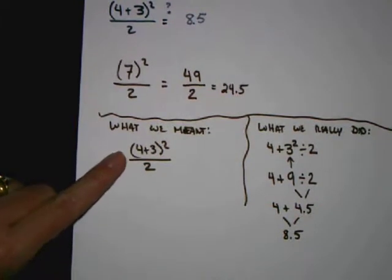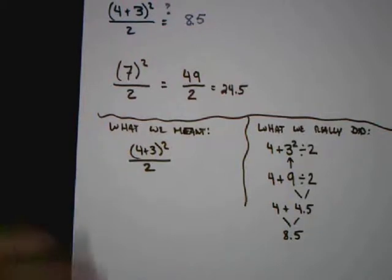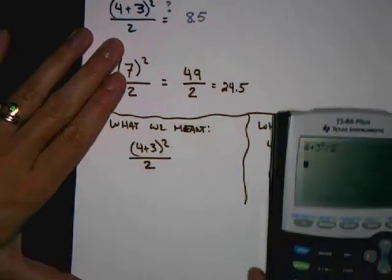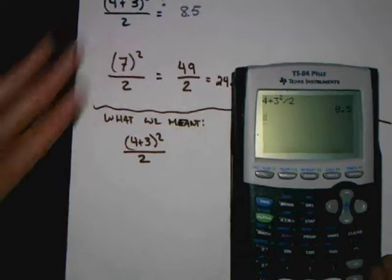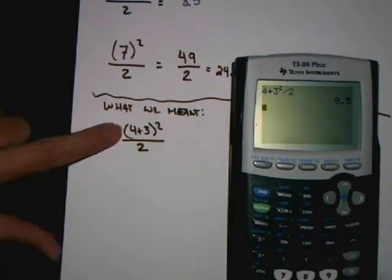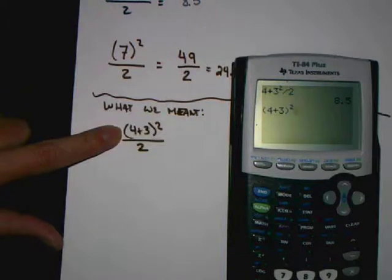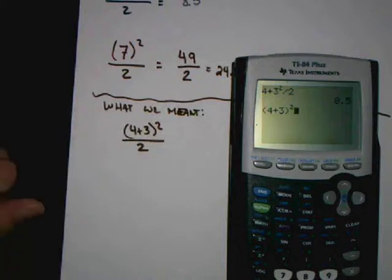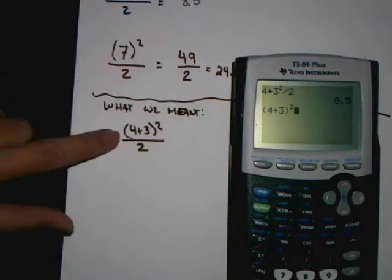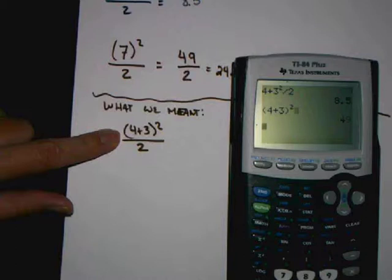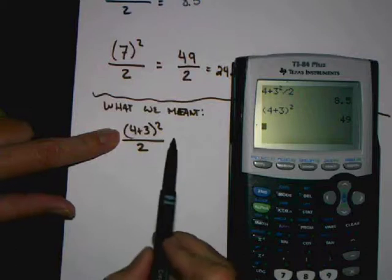So how do we get our calculator to do what it is that we really meant? Well, what we have to be is a little bit more precise in how we enter stuff into our calculator. First off, we want to use these parentheses. We want to open some parentheses and enter the 4 plus 3 in there. And then we want to take that whole thing and square it. Now what I would suggest you do is before you try and do the dividing by 2 in the same step, let's let our calculator do just this step for us. That gives us an answer of 49.